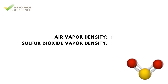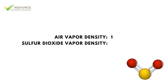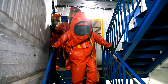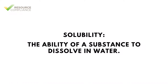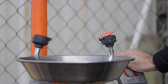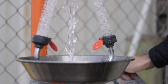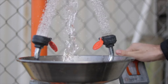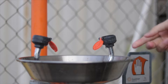Sulfur dioxide vapor is more than two times heavier than air, as expressed by a vapor density of 2.26. This means that sulfur dioxide will accumulate at ground level, which will be hazardous to humans in the area. The ability of a substance to dissolve in water is referred to as solubility. Sulfur dioxide is highly soluble, which means it readily absorbs into water. This explains why eyewash and safety showers are essential for decontamination in the event of exposure.